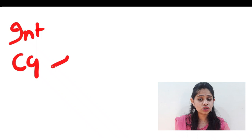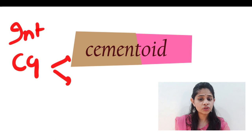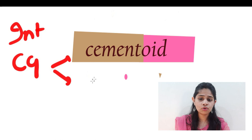We spoke about the two major stages: the first stage being the formation of the cementoid tissue — the immature cementum — and how it then undergoes calcification to produce the mature cementum.